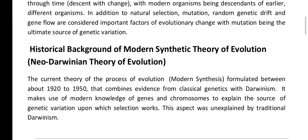The historical background of the Modern Synthetic Theory of Evolution: the current theory of the process of evolution, i.e. modern synthesis, was formulated between about 1920 to 1950. It combines evidence from classical genetics with Darwinism and makes use of modern knowledge of genes and chromosomes to explain the source of genetic variation upon which selection works — an aspect unexplained by traditional Darwinism. New Darwinism is known as the Modern Synthetic Theory of Evolution because it is based on knowledge of genes and chromosomes.